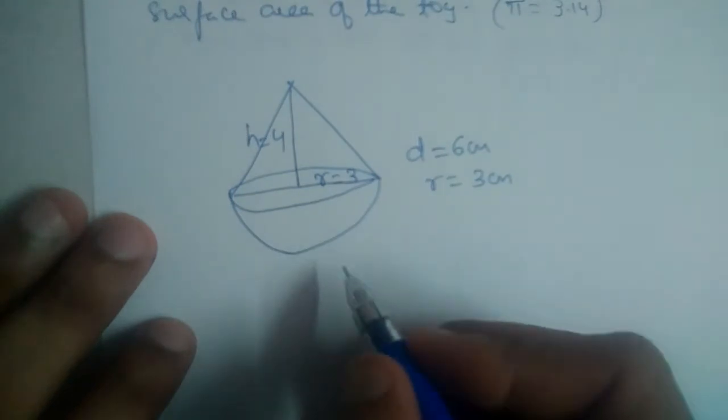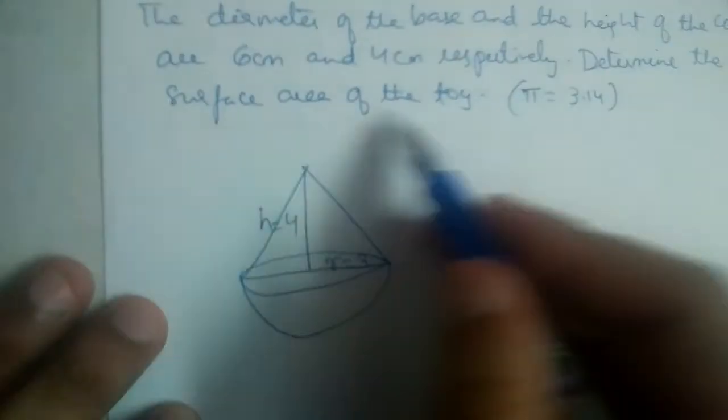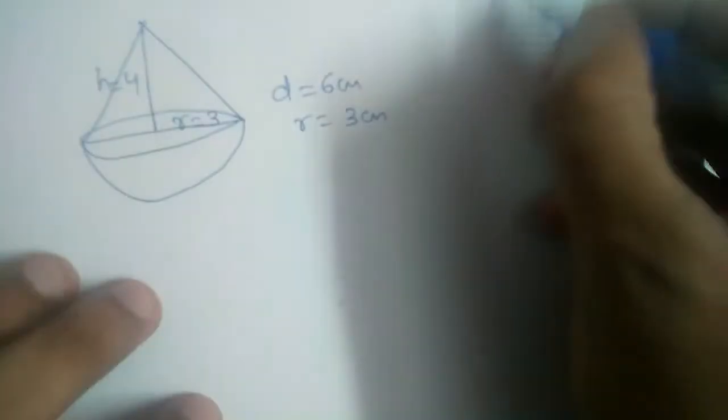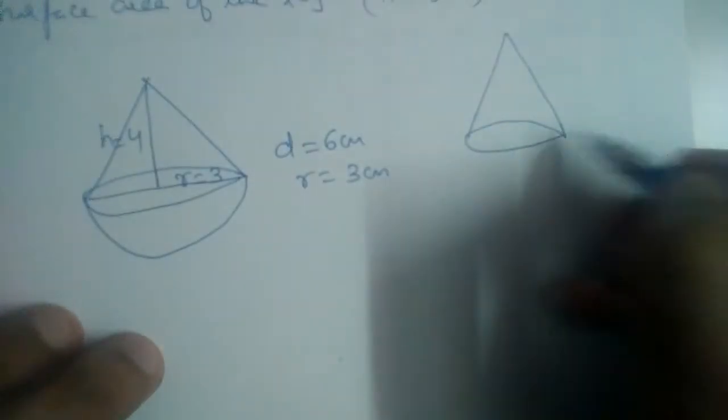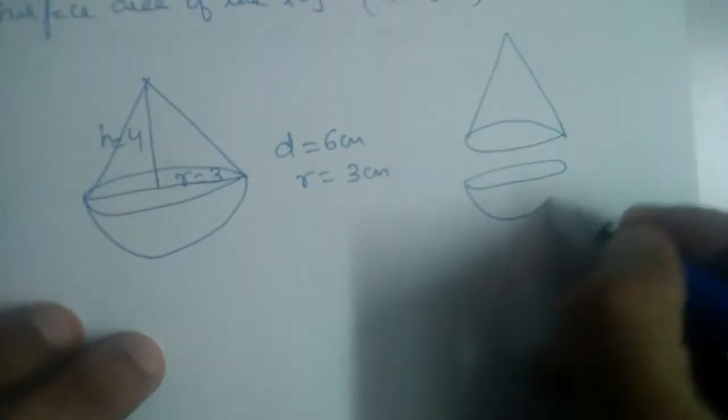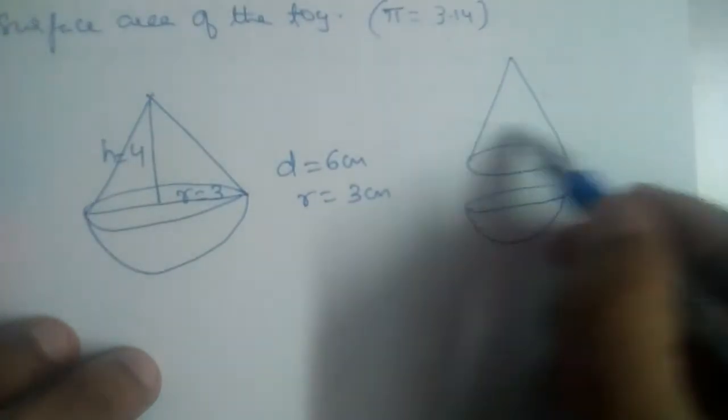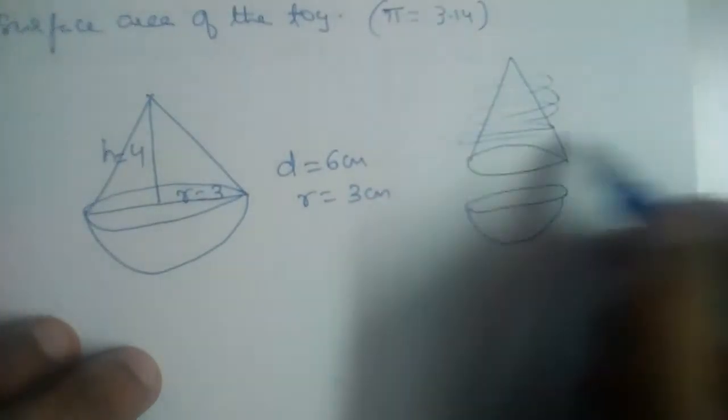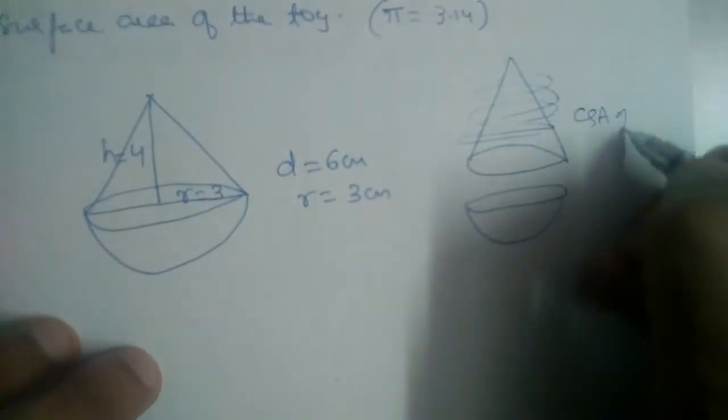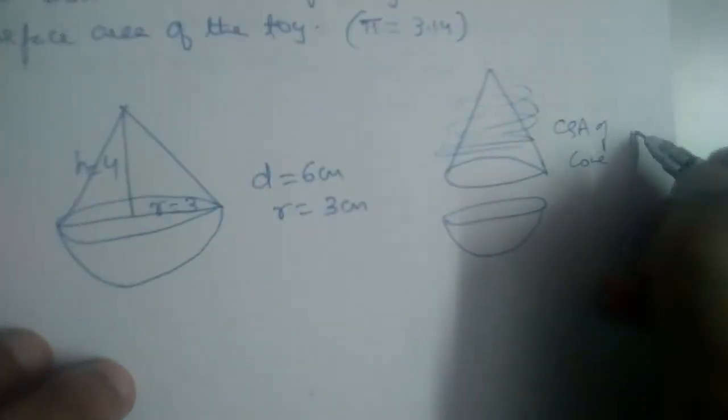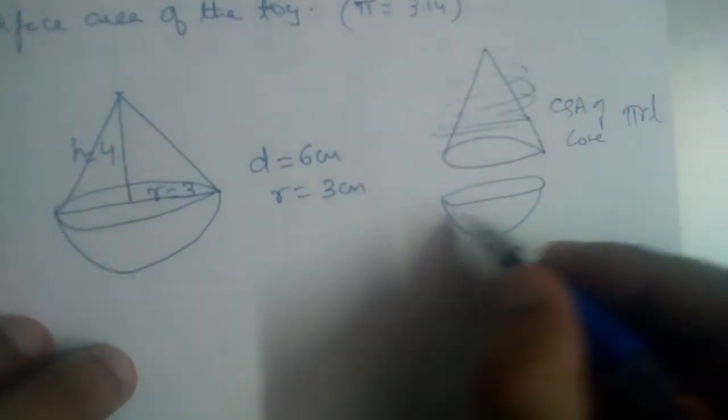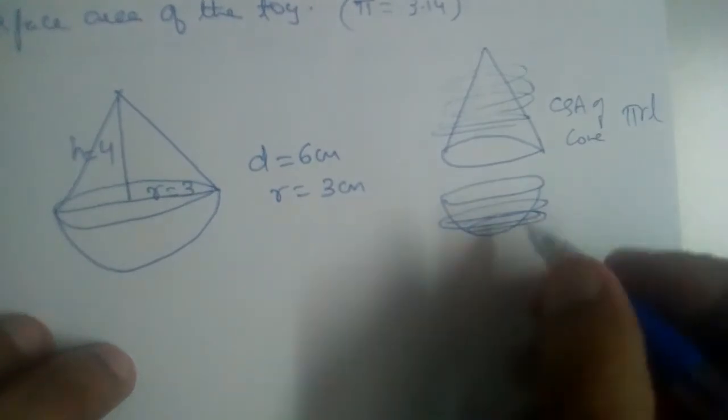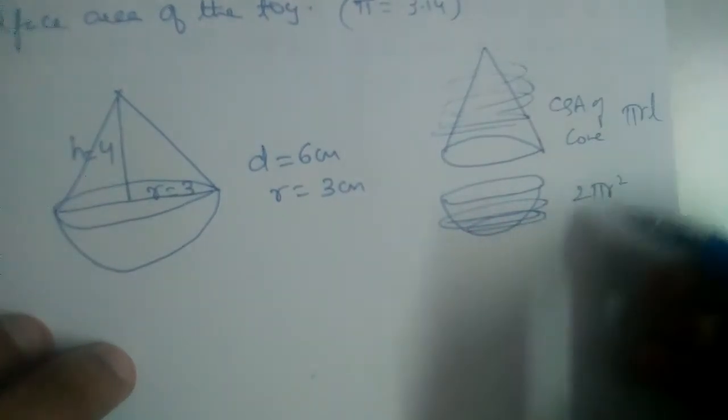Determine the surface area of the toy. That means we have two solids attached here, two different solids. So we need to find curved surface area of cone, CSA of cone, which is equal to πrl.